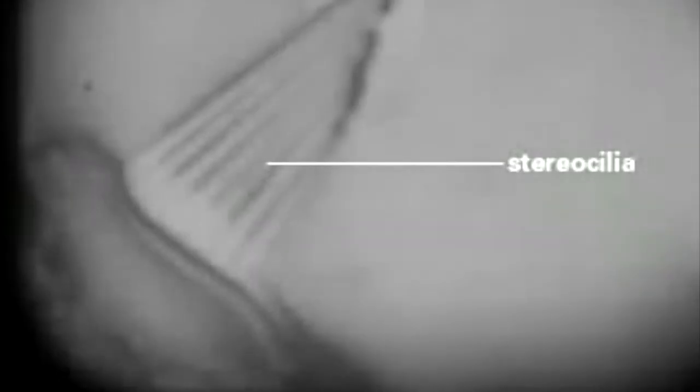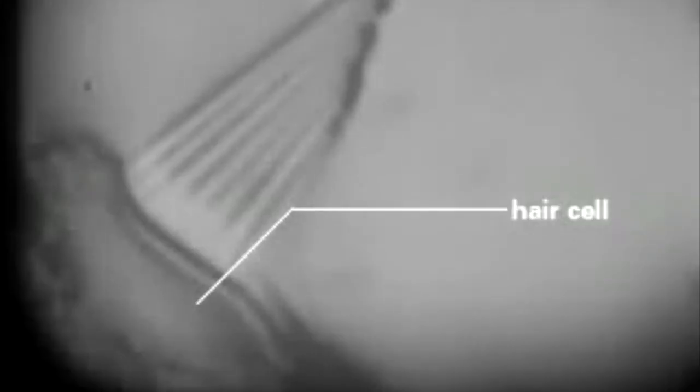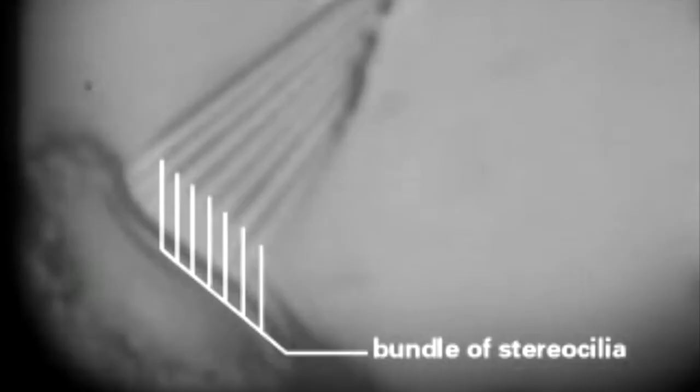In the inner ear, stereocilia are the mechanical sensing organelles of hair cells, which respond to fluid motion in numerous types of animals for various functions, including hearing and balance. They are about 10 to 50 micrometers in length and share some similar features of microvilli. The hair cells turn the fluid pressure and other mechanical stimuli into electrical stimuli via the many microvilli that make up stereocilia.